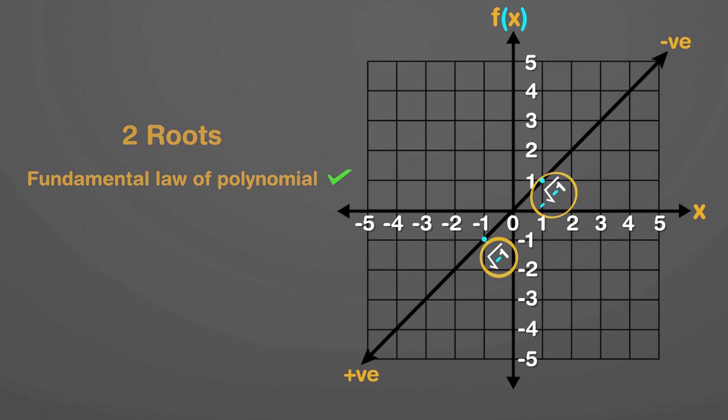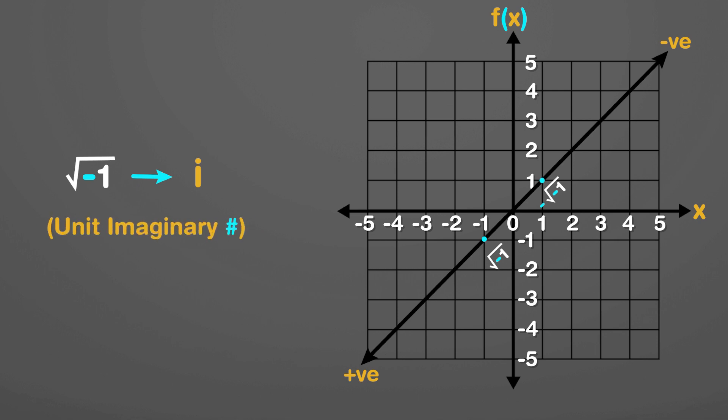Now let's talk about the notation of imaginary numbers. Square root minus 1 is represented by a little handy letter i, just because such numbers are called imaginary. Square root minus 1 or i is called a unit imaginary number.